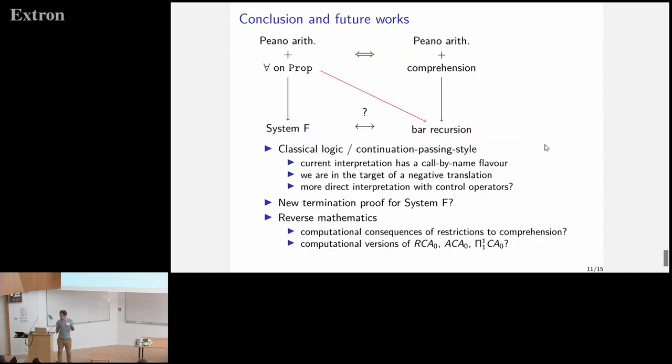To conclude, for further work, I would like to study a bit this notion of classical logic, which seems to be needed for update recursion. I'd like to see, in some sense, we are in the target of a CPS translation that still needs to be found. That's one of my goals. Then, of course, it would be really nice to have an alternative proof of termination for System F that wouldn't rely on direct impredicativity, but rather on things like Zorn's lemmas or things like this.